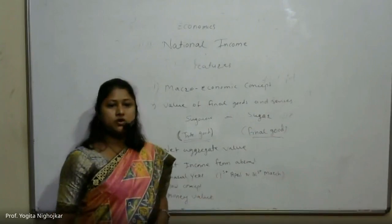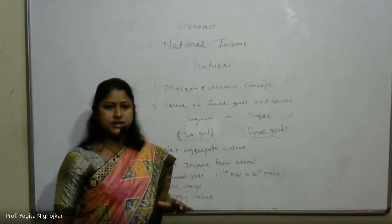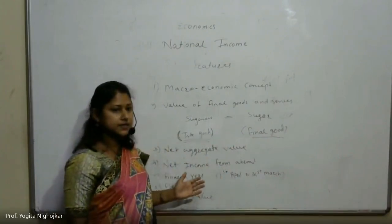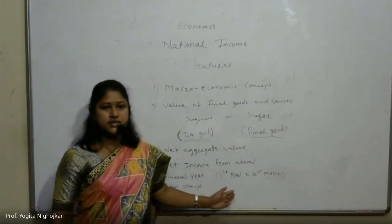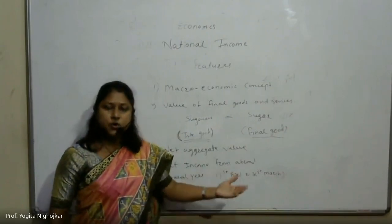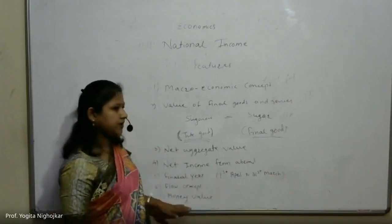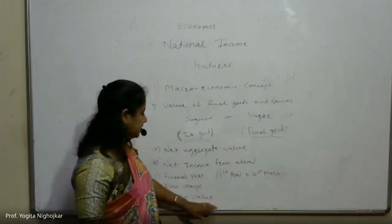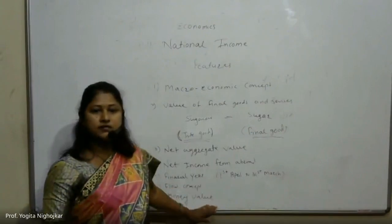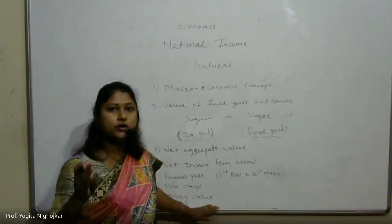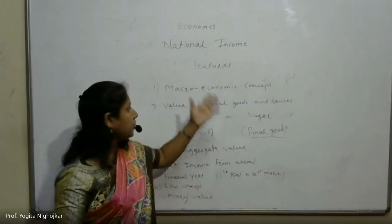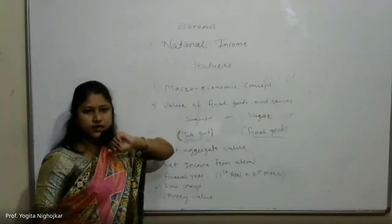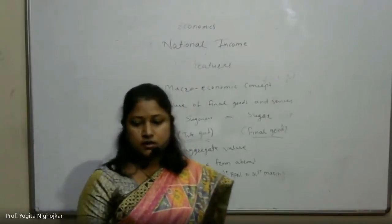The next feature is money value. National income is always expressed in monetary terms. It represents those goods and services which are exchanged for money only. We measure here only those goods and services which are exchanged for money. I hope you all understand the meaning of national income and the features of national income.